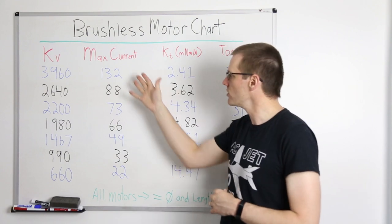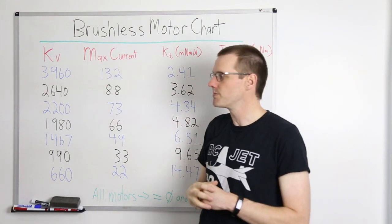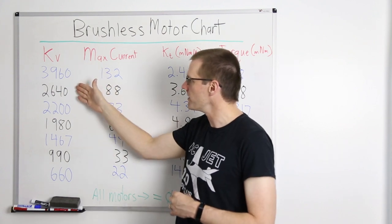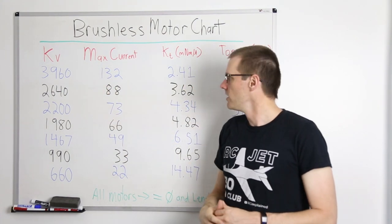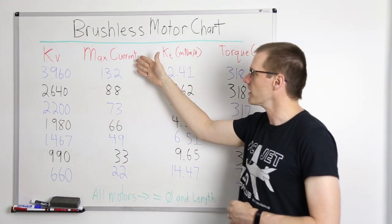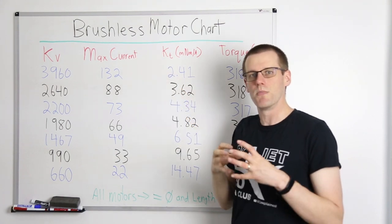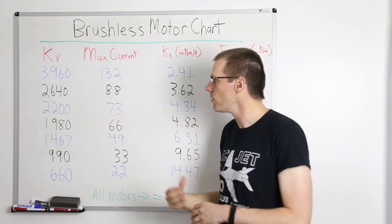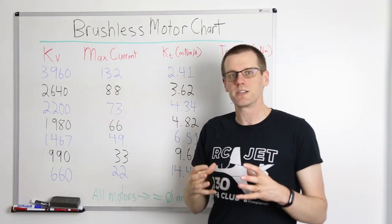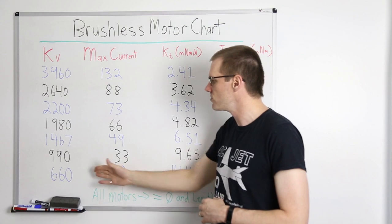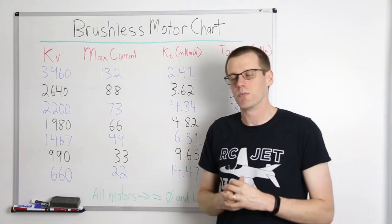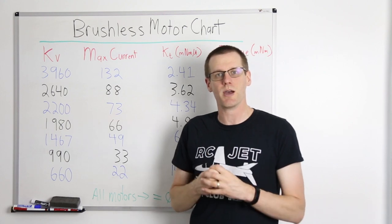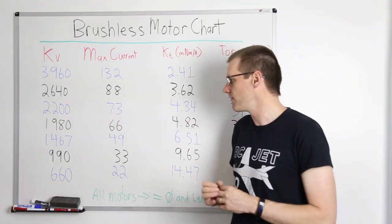The first two parameters come directly off the specification sheet. As you drop in KV value, you also drop in the maximum current that motor can potentially deliver. We start at 132 amps for the 3960 KV motor, but if you drop to the 660 KV motor, you're only going to be able to pull a maximum of 22 amps — a huge significant difference.